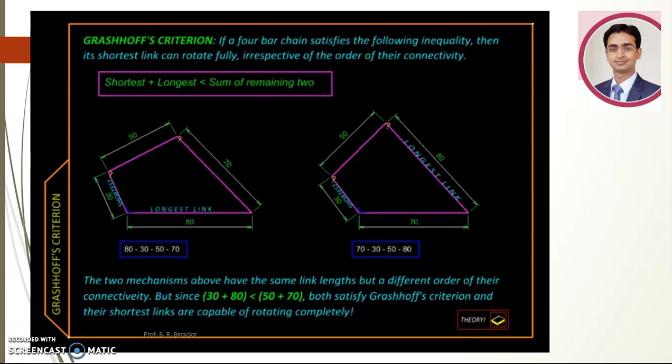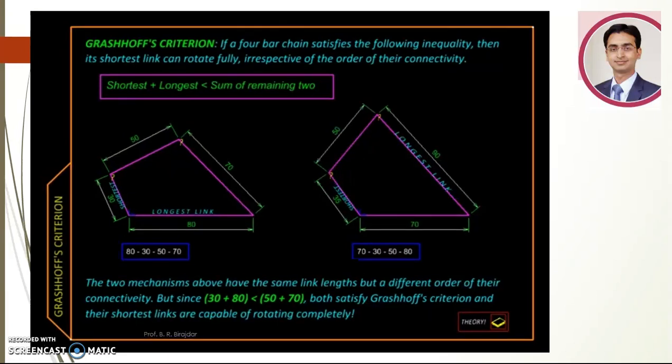And we are going to learn a test that tells if this mechanism will have a link capable of complete rotation. Now why are we so concerned about having a link that completely rotates? Because such a link can then be connected to an electric motor, or in olden days say a steam engine or an internal combustion engine, and the whole mechanism can then be driven automatically. The condition we are going to study is called Grashof's criteria. It says if the sum of the shortest and the longest link length is less than the sum of the remaining two link lengths, then we should have a crank in our four bar mechanism.